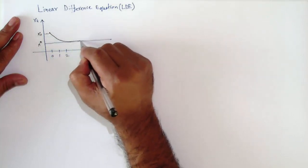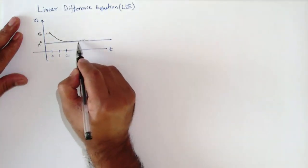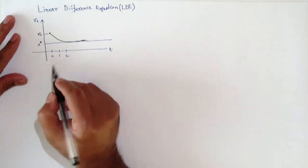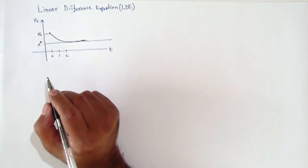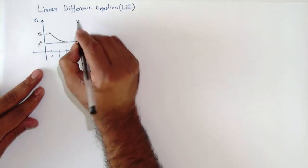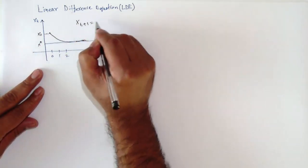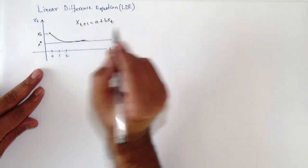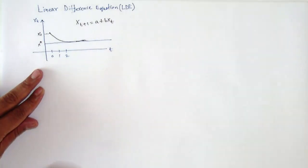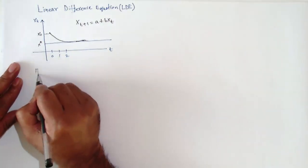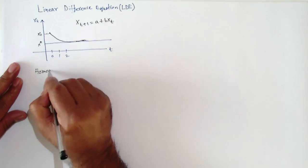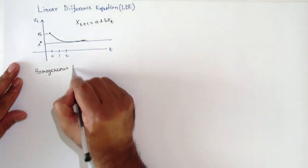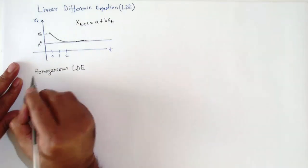x* is our equilibrium. At t equals zero we have the initial value x_0. We write the linear difference equation as x_{t+1} equals a plus b*x_t. This is a first-order linear difference equation because x_{t+1} only depends on the previous value x_t, where a and b are constants.